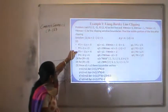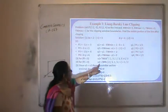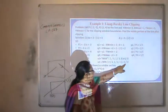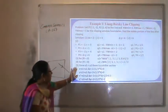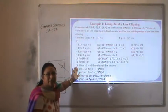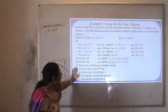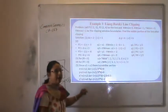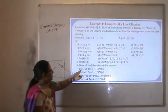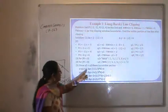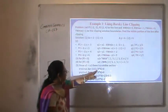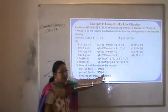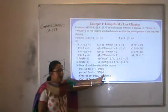For p1 and p3 which are less than 0, we calculate u1 as the maximum of 0, 1/3 and 1/3 — so u1 = 1/3. For p2 and p4 which are greater than 0, we calculate u2 as the minimum of 1, 2/3 and 1/2 — so u2 = 1/2. Since u1 < u2, there is a visible section. Using the parametric equation: x = x1 + u1·delta-x = minus 1 + (1/3)·3 = 0, giving the first intersection point (0, 0).